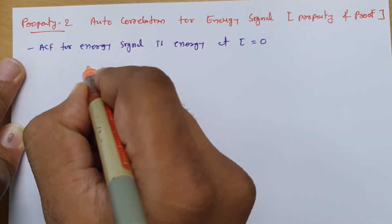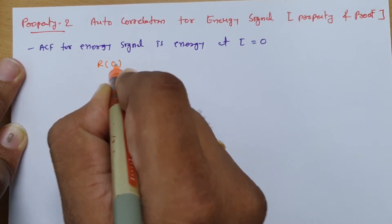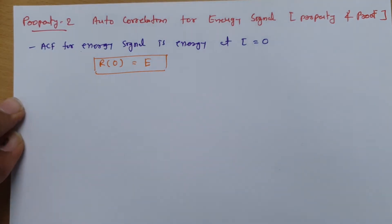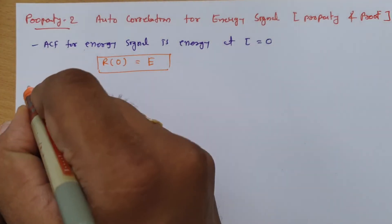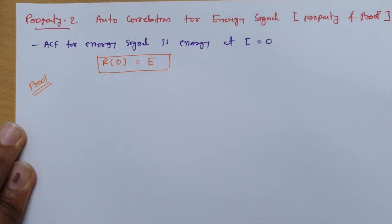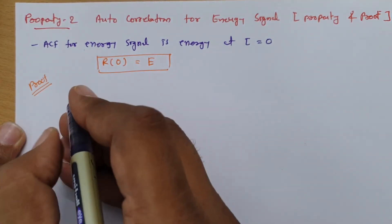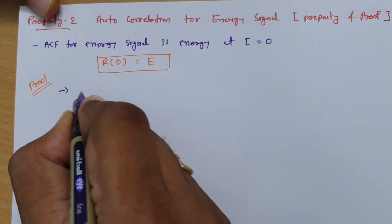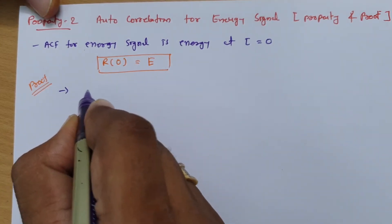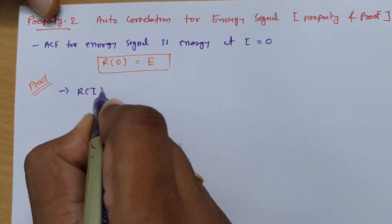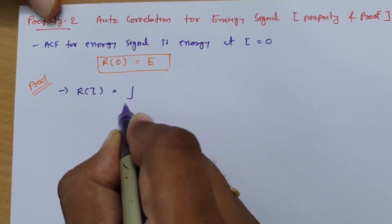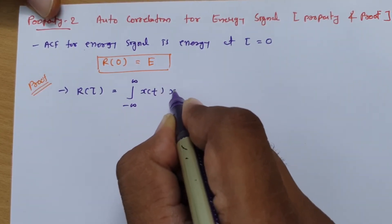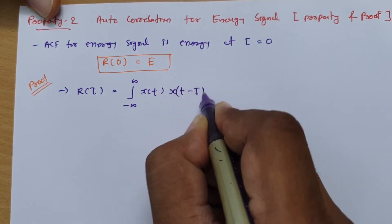So the second property states: r(0) is equals to energy E. Now let us have a proof of it. First I will define the autocorrelation function. If we have signal x(t), then the autocorrelation of that will be r(τ), and r(τ) is equals to integration from minus infinite to infinite of x(t) into x(t minus τ) dt.